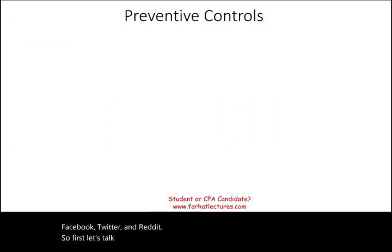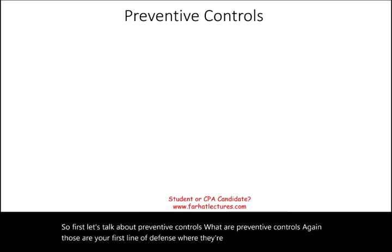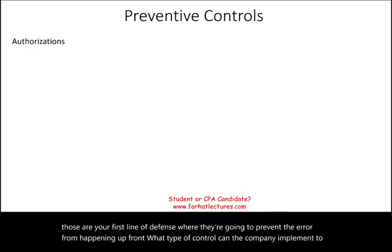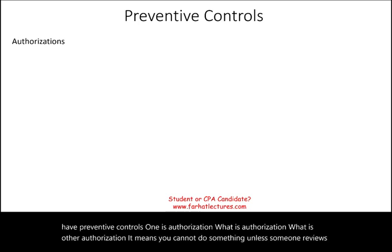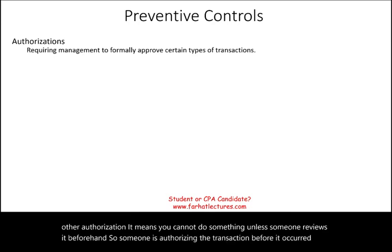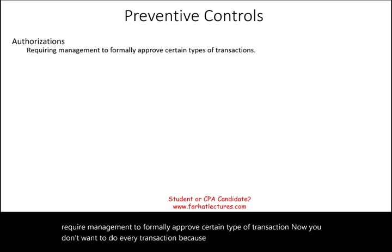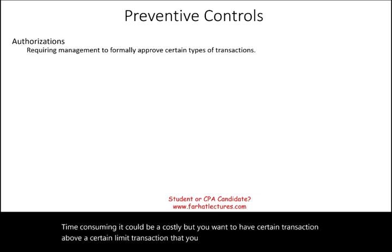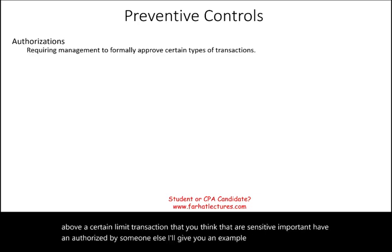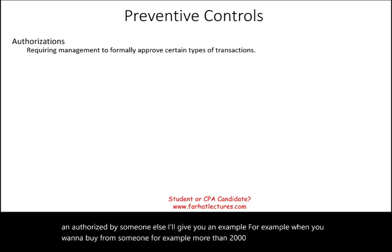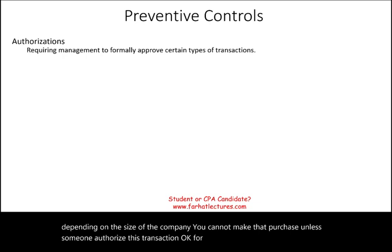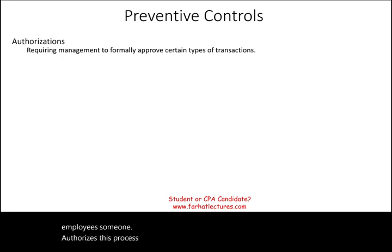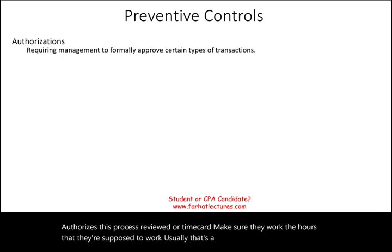So first, let's talk about preventive controls. One is authorization — it means you cannot do something unless someone reviews it beforehand, authorizing the transaction before it occurs. It requires management to formally approve certain types of transactions above a certain limit. For example, when you want to make a purchase of more than $2,000, $5,000, or $500 depending on the size of the company, you cannot make that purchase unless someone authorized it. Before you pay your employees, someone authorizes the process, reviews their time card, and ensures they worked the proper hours before payment is made.